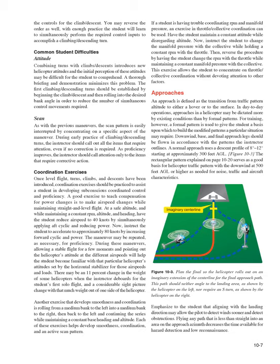Another exercise that develops smoothness and coordination is rolling from a medium bank to the left into a medium bank to the right, then back to the left, continuing the series while maintaining a constant base heading and altitude. Each of these exercises helps develop smoothness, coordination, and an active scan pattern. If a student is having trouble coordinating RPM and manifold pressure, an exercise in throttle/collective coordination can be used: have the student maintain a constant attitude while disregarding altitude, then change the manifold pressure with the collective while holding a constant RPM with the throttle, then reverse the procedure. This allows the student to concentrate on throttle/collective coordination without devoting attention to other factors.